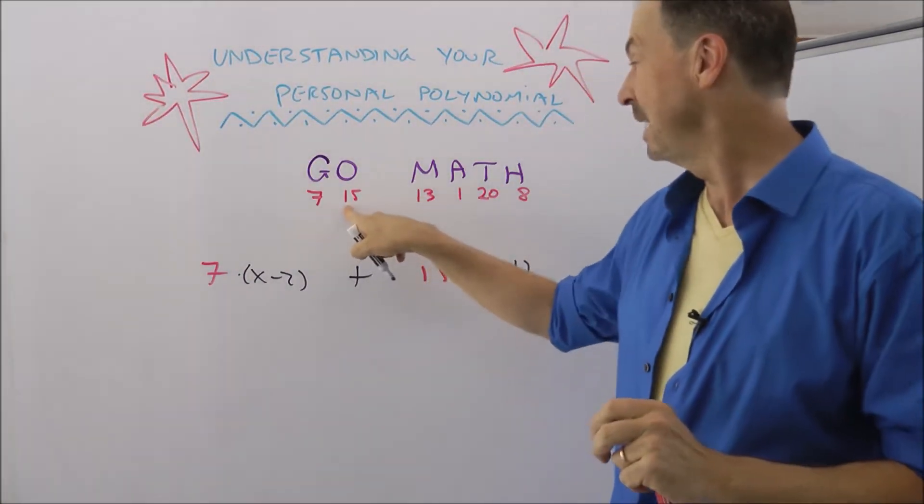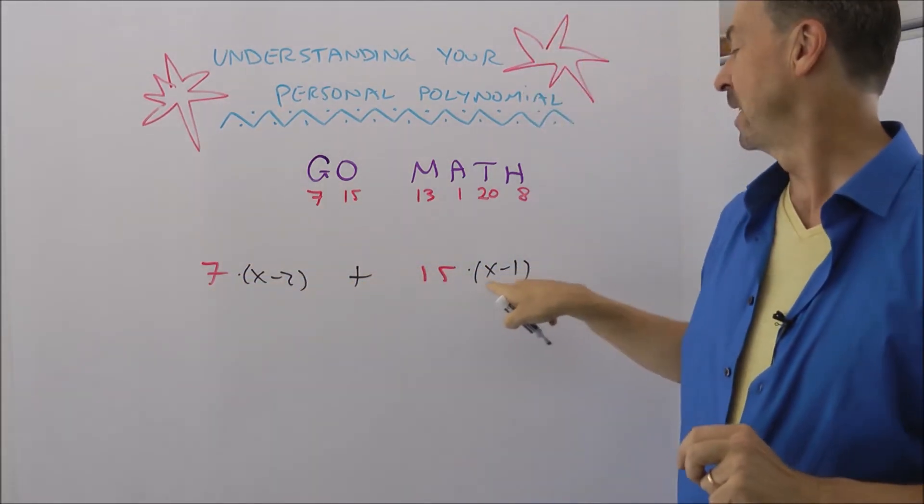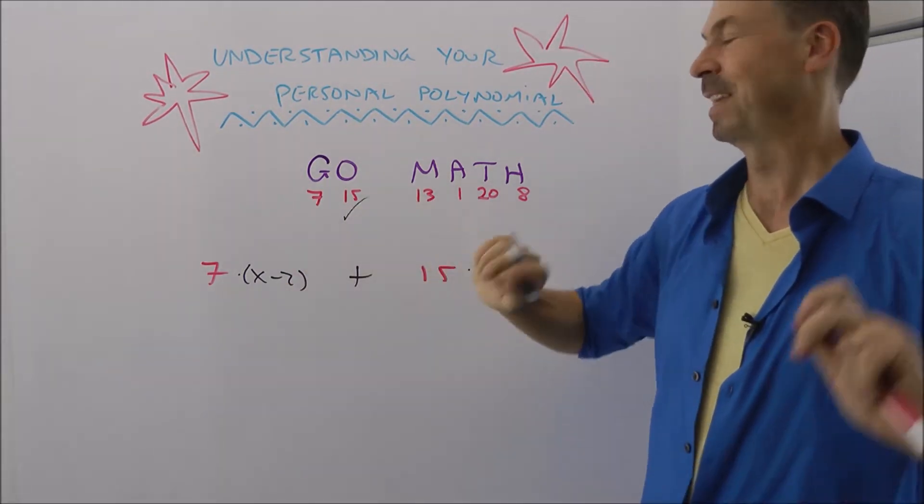Let's put in x equals 2. Do I indeed get 15? 7 times 2 minus 2 is 0. 7 times 0 is 0. Yep, 0. Plus 15 times 2 minus 1, 15 times 1, 0 plus 15 is 15. Beautiful.